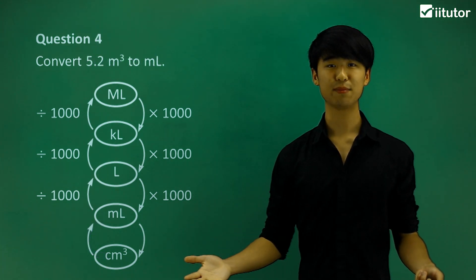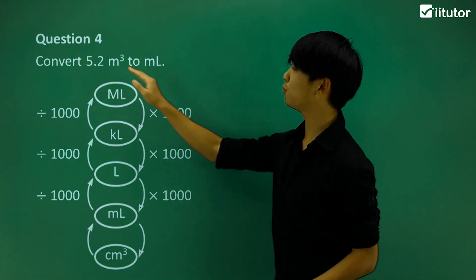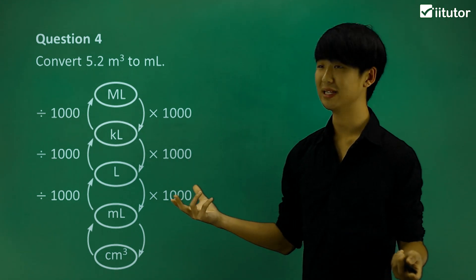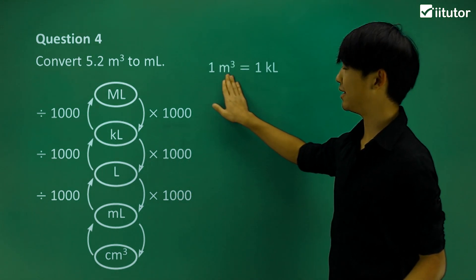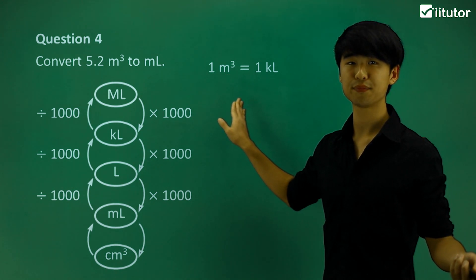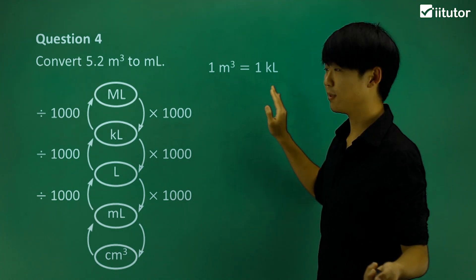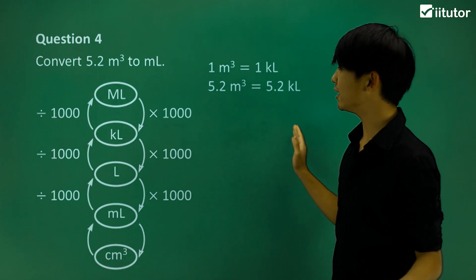Now, if we take a look at number four, we're going to convert 5.2 meters cubed to milliliters. And the first thing I'm going to note here is 1 meter cubed is 1 kiloliter. And to go from there, I'm going to multiply again by 5.2 on both sides.